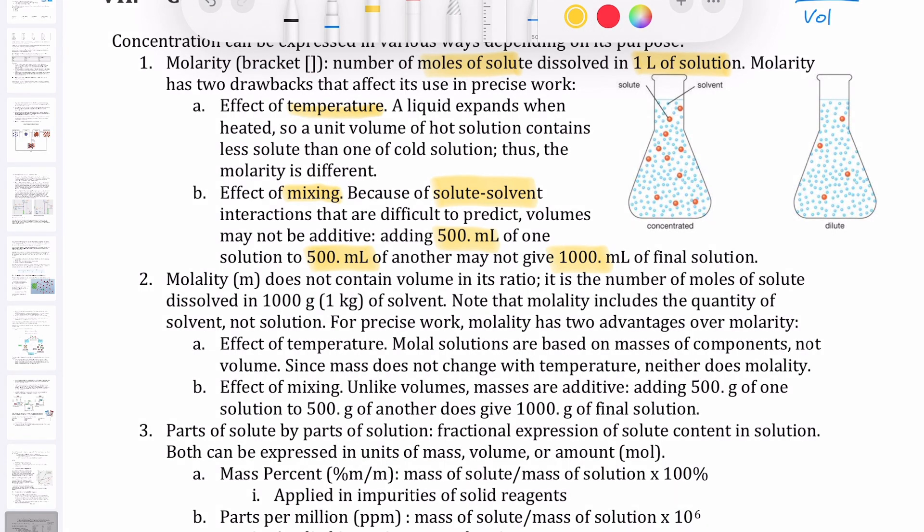And so to correct for these issues that are present in molarity, a new type of concentration measure is developed, particularly for some of these colligative properties where we're measuring the properties right where the substance is boiling or when the substance is freezing. And so that measure is called molality.